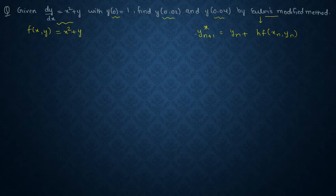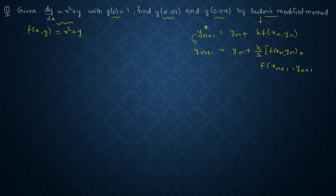Then when you modify this into Euler's modified method, you need to find out yn+1 = yn plus h/2[f(xn, yn) plus f(xn+1, yn+1*)]. That means you need to put this value into here into this form. So let's see how it works.